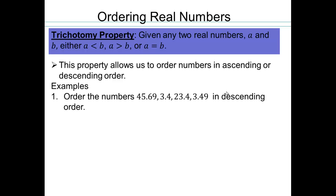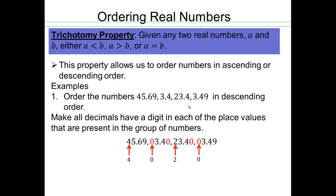So let's say I want to order these decimal numbers. If you want to order decimal numbers, the first thing is to get them all to have an equal number of digits. So if you look right now, 45.69 and 3.4 do not have the same number of digits. So in all the missing place values, you insert zeros so that they all have four digits, because that's the largest number of digits across the numbers.